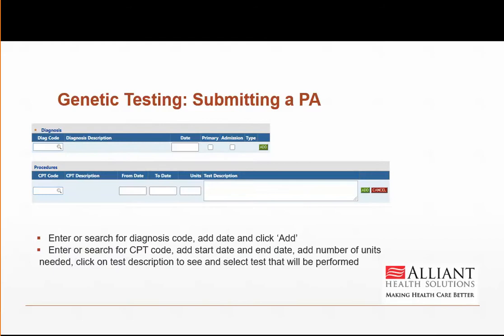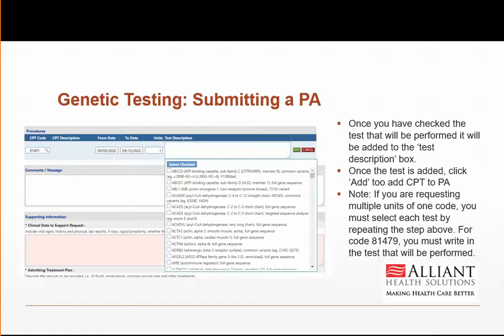Moving further down the same page, you will see fields to enter diagnosis and CPT codes. Enter or search for the ICD-10 code, add the date, and click Add to add a diagnosis code to the PA. More than one diagnosis code can be entered. Then enter or search for a CPT code, add start and end date and number of units. Click on Test Description and select which test will be performed. A drop-down menu will appear — check the box next to the name of the test being requested and click Add to add the CPT line to the PA. If requesting multiple units of one code, you must select more than one test and add each test individually. For code 81479, you must write in the test that will be performed.